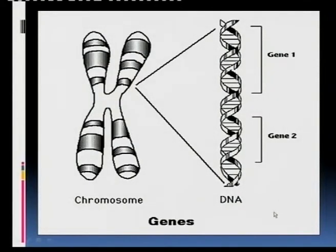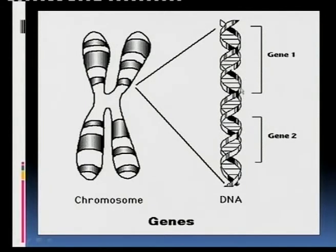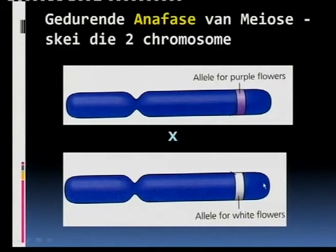Here is a slide showing that if we refer to a gene — a specific gene — the gene is a long string on the DNA, a long section. This will code for one gene, and then another gene follows. These genes on the chromosome are long strings of nucleotides found on the DNA.